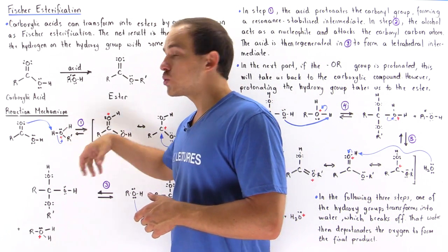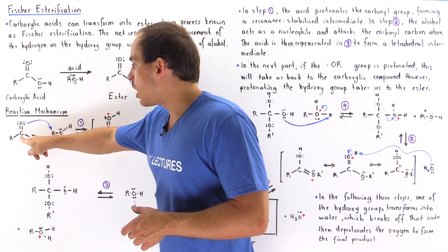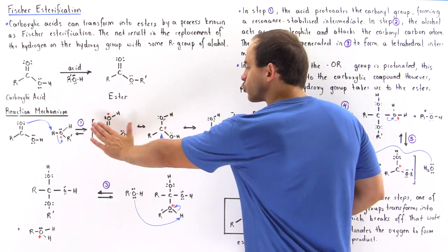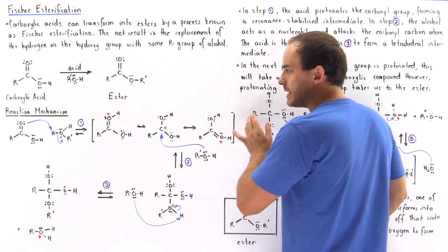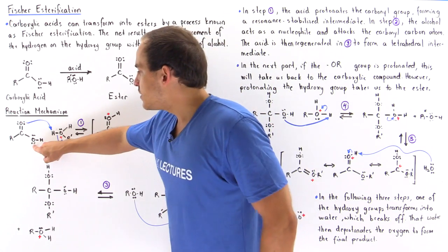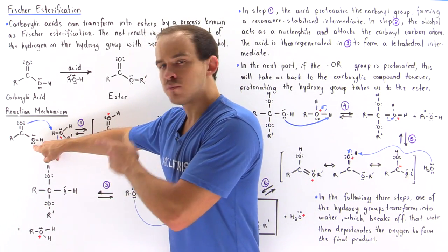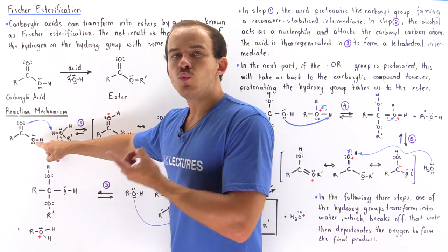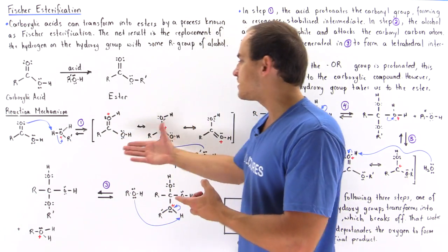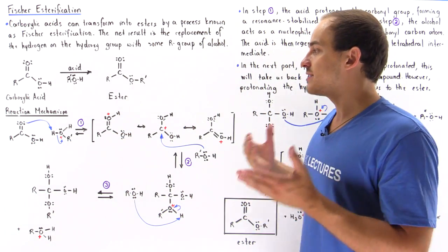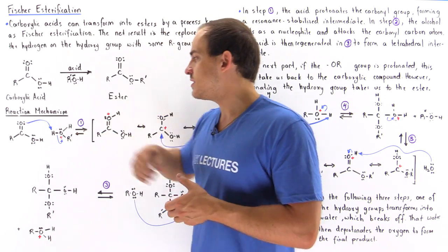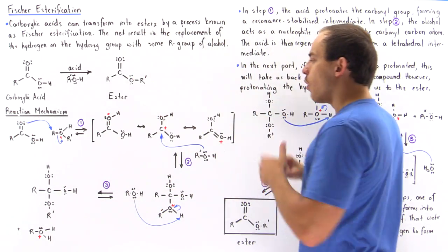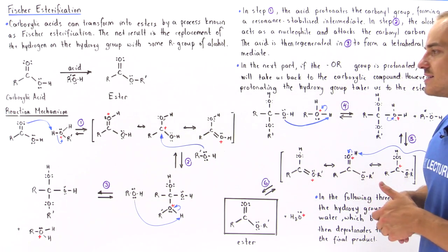This acid protonates the oxygen of the carbon-oxygen double bond to form a resonance-stabilized intermediate. Notice that the other oxygen could also be protonated, but if that oxygen is protonated we do not form a resonance-stabilized intermediate. That's exactly why this carbonyl oxygen is the one that gets protonated — because we do form the resonance-stabilized intermediate.